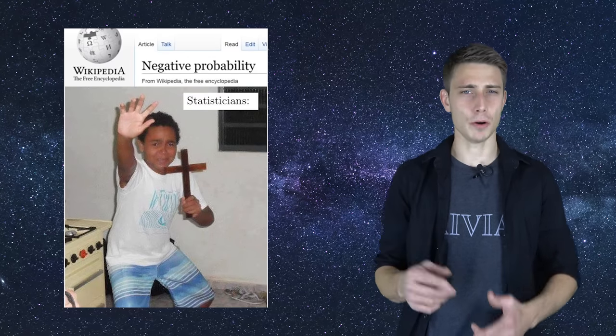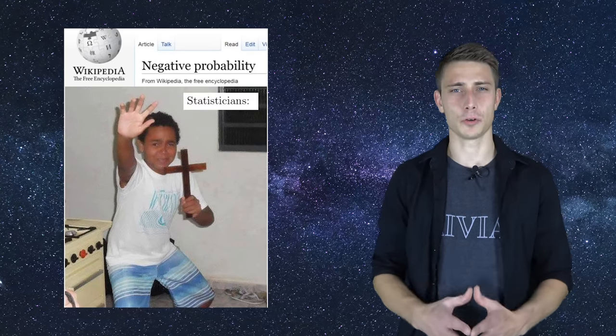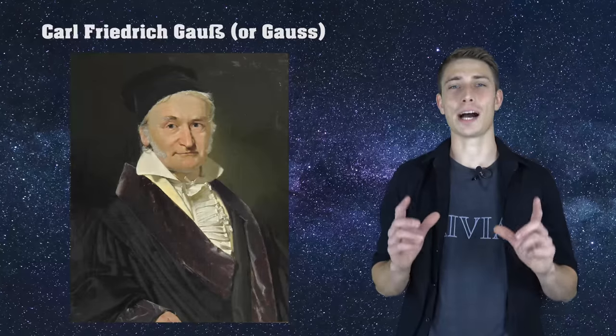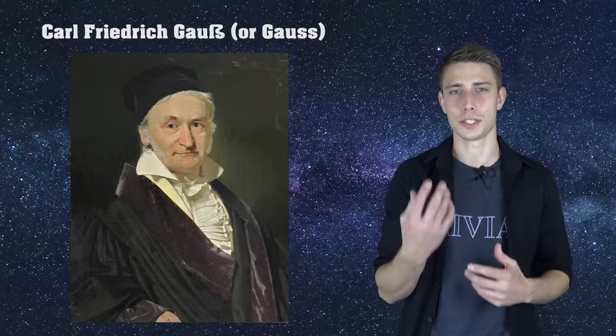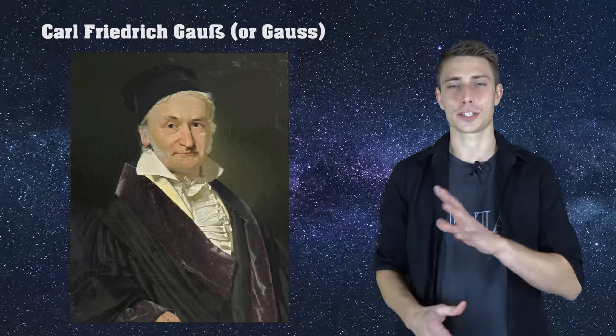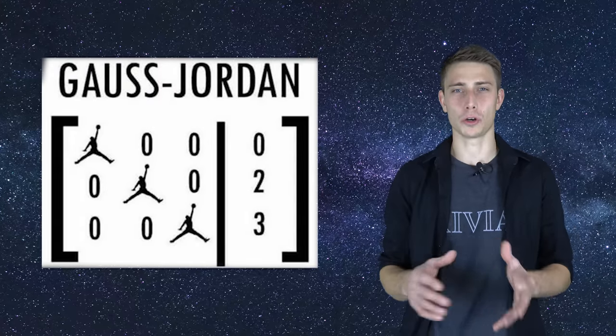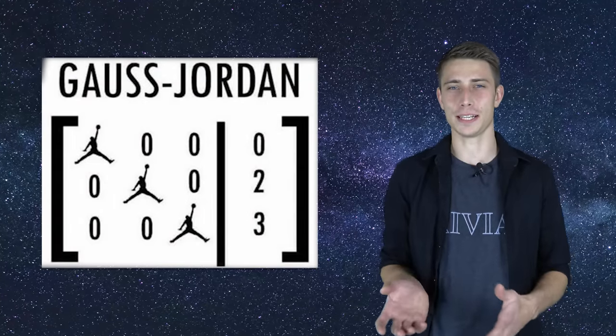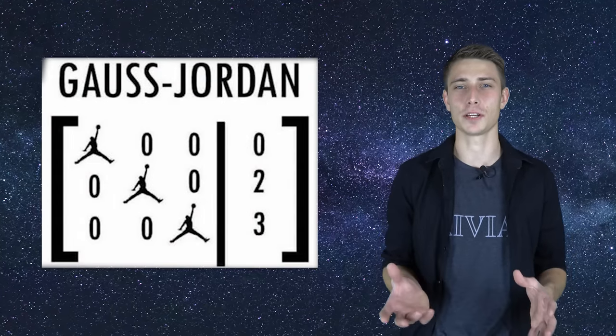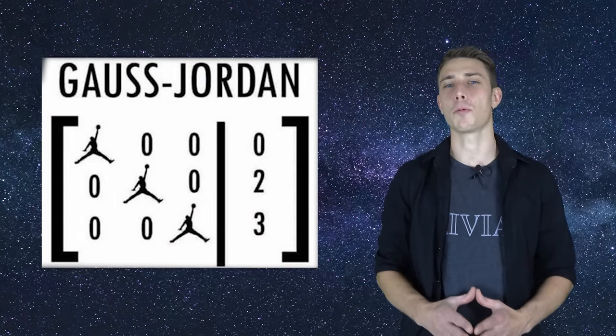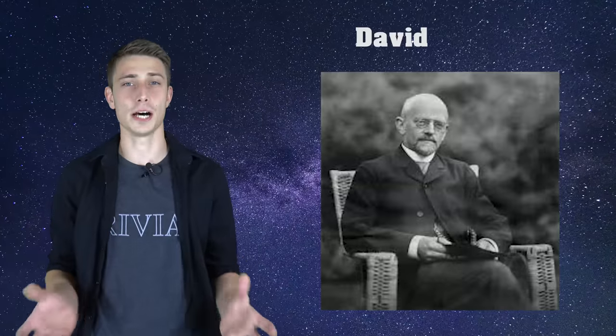Surprisingly enough, most people pronounce his name correctly. It might ring a bell — his name is Karl Friedrich Gauss. Gauss — it's really easy to say. Just don't get his first names wrong: Karl Friedrich. And if you say something like Gaussian integral or Gaussian elimination, you'd better say it as 'Gow-sian' — it fits his name way better.